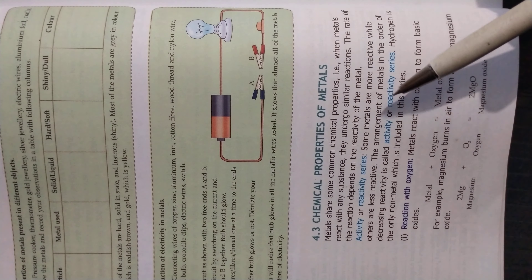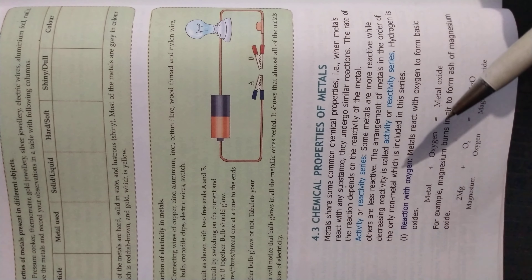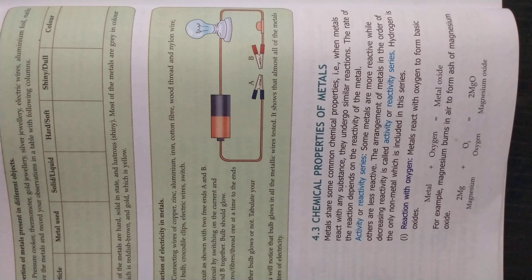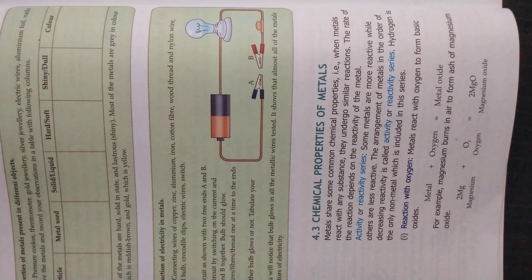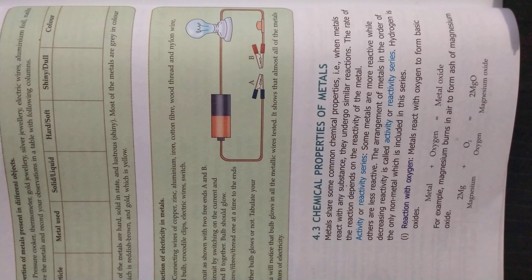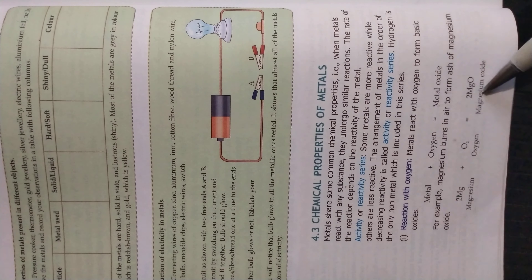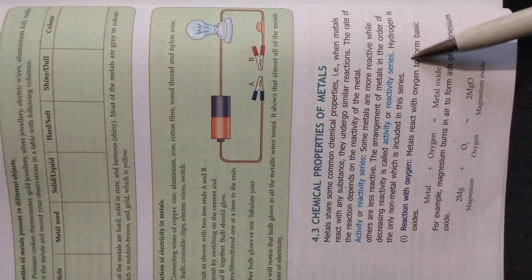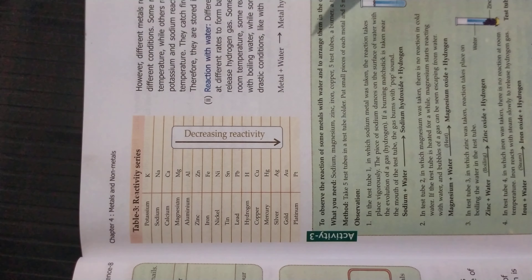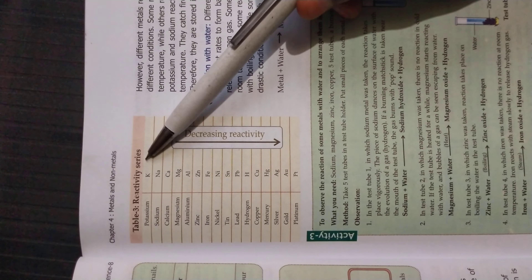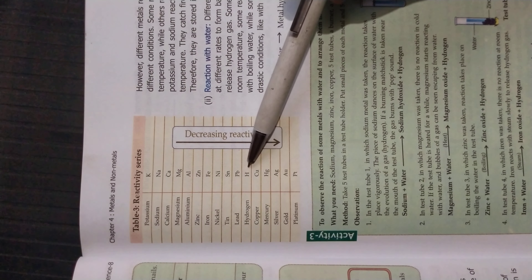All the different metals present in our environment are arranged in a table according to their reactivity. Some elements are more reactive while others are less reactive — for example, gold and platinum are noble metals that do not show any reaction. When all metals are arranged in decreasing order of their reactivity, this is called the reactivity series. Hydrogen is the only non-metal included in this series, at the top are the highly reactive elements and at the bottom are the least reactive.